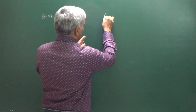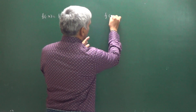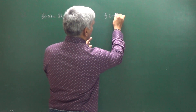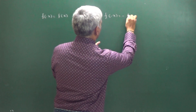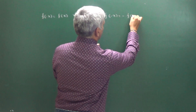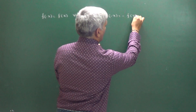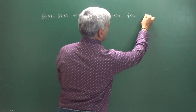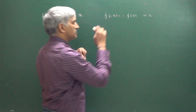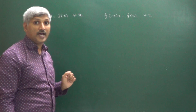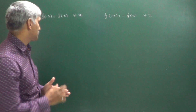At the same time, if f of minus x is equal to minus f of x for all x, then the function is said to be an odd function.